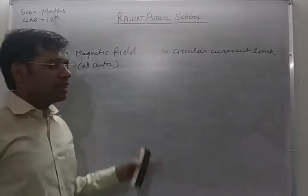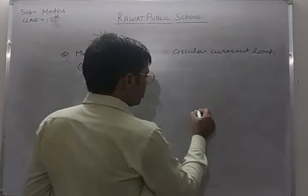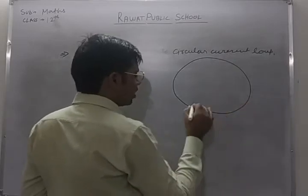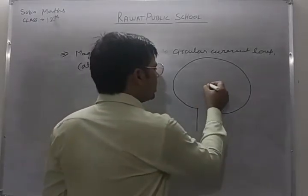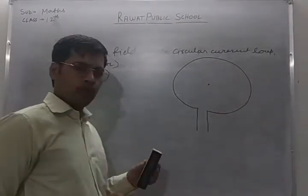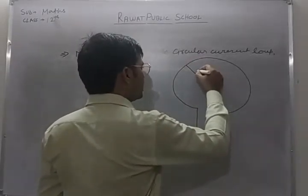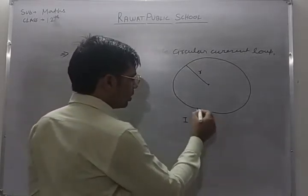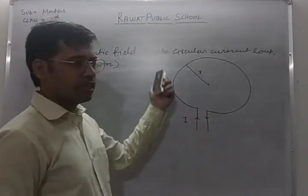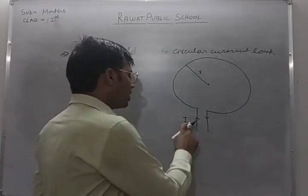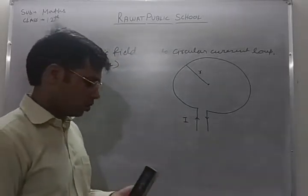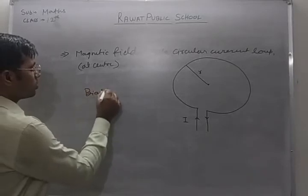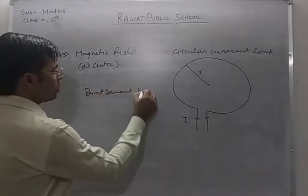Before going into the derivation in detail, let us understand the diagram. Let's suppose this is a circular current loop, and at the center we need to calculate the magnetic field. The radius of this loop is R, and the amount of current flowing through this circular loop is I. The current is entering and has to leave the loop.